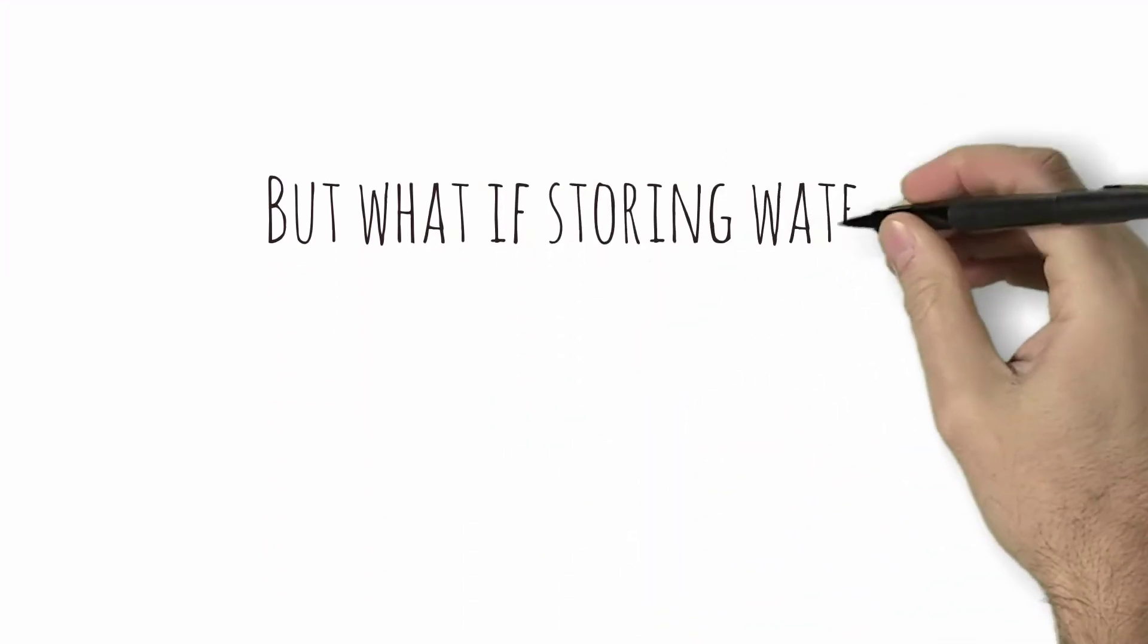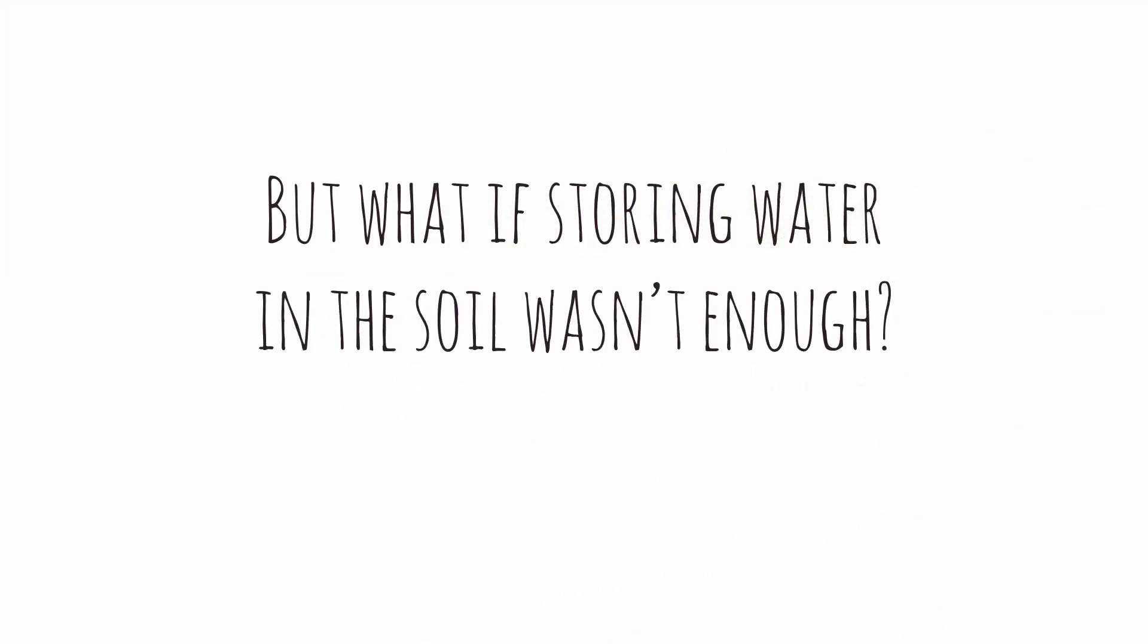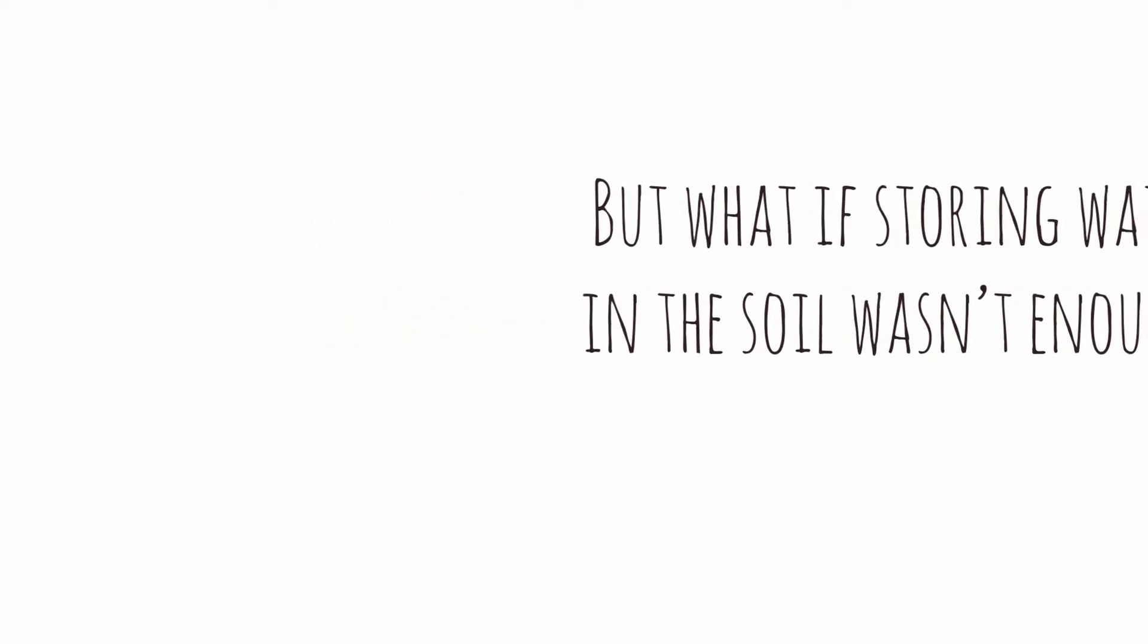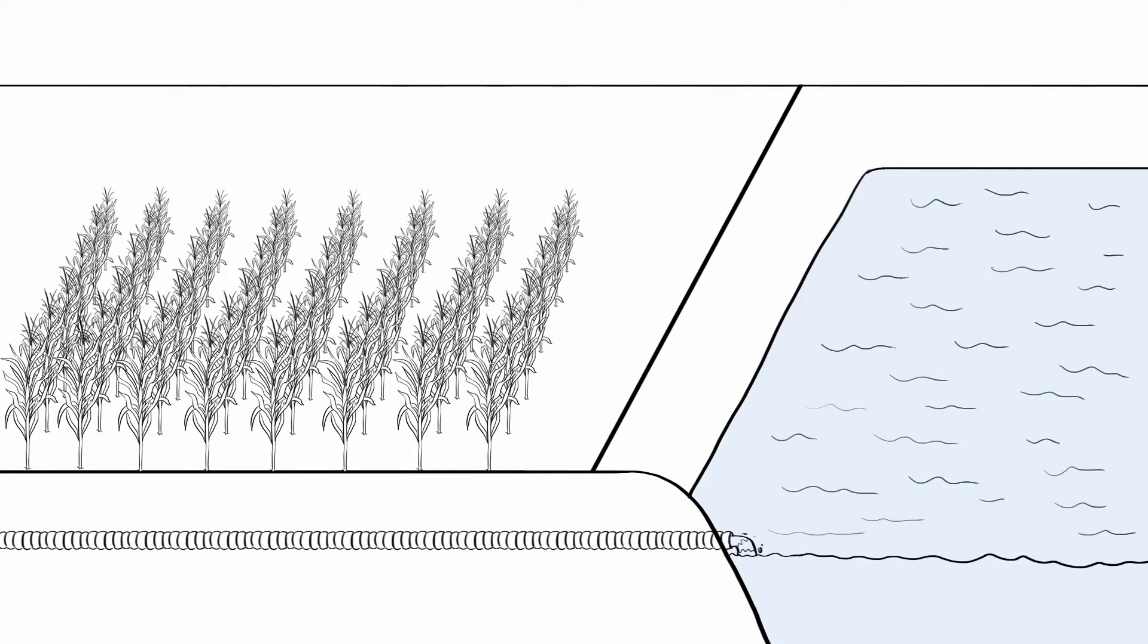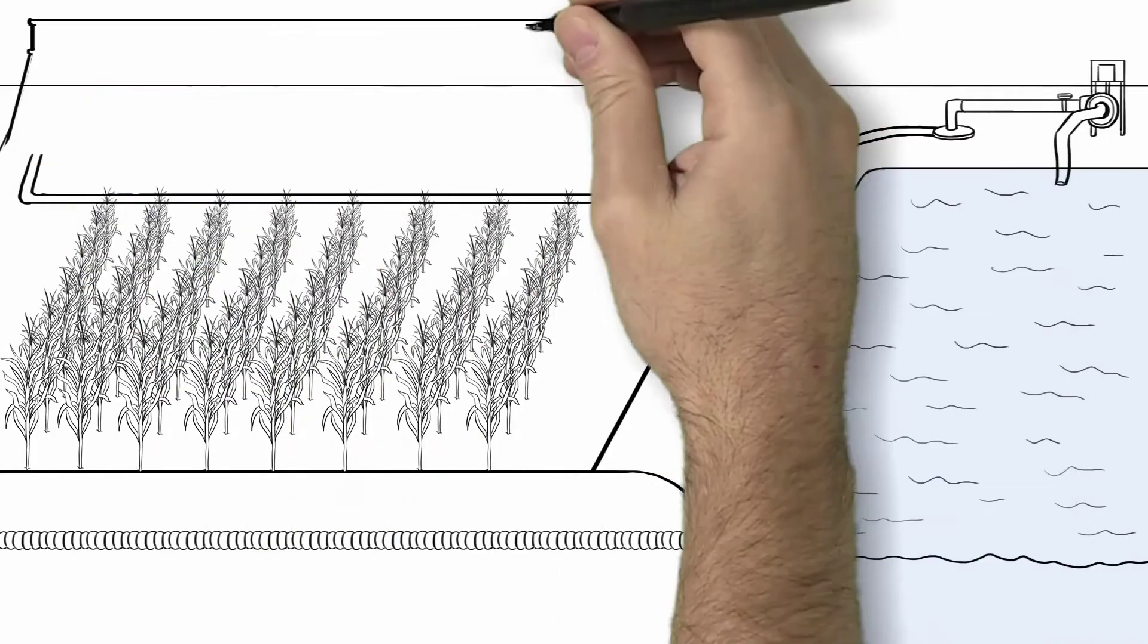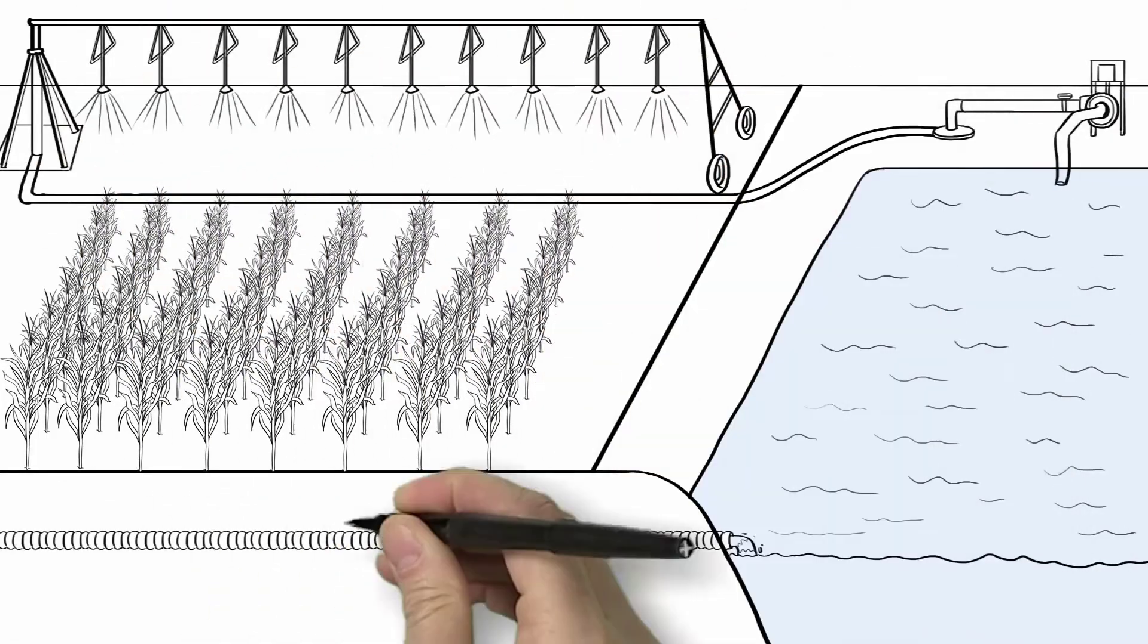But what if storing water in the soil wasn't enough? What if some fields could benefit from more water? Maybe he could build a pond in his field down the road, where he could store water in the spring when the tiles are running. Then he could irrigate it back onto the field in summer when the water is needed.